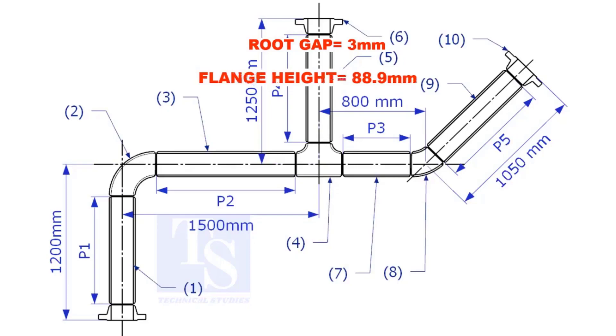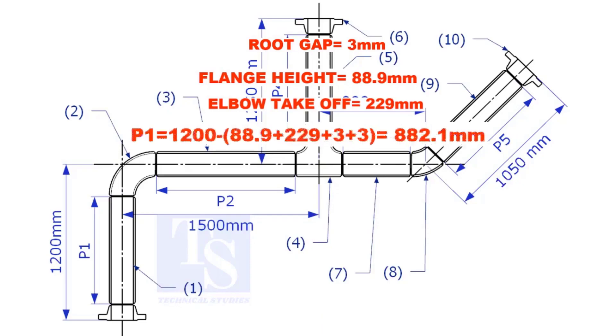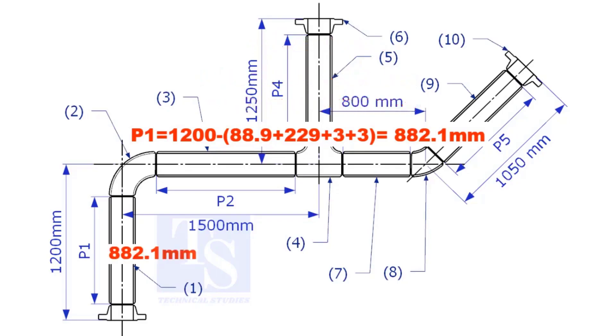Assume the root gap is 3mm. Substitute the sum of the height of the flange, elbow takeoff, and 2 root gaps from the total length of 1500. Length of pipe P1 is 882.1mm.